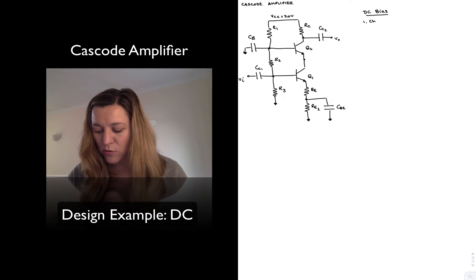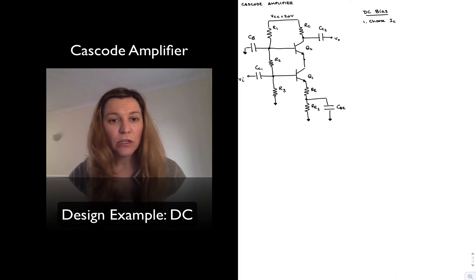Step number one, I'm just going to select my quiescent collector current, and let's say I select it to be 2 milliamps.